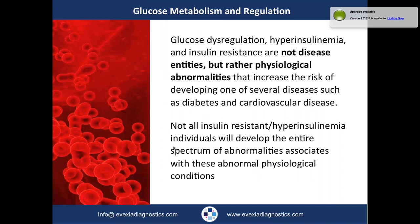Let's take a look at this first slide. Glucose dysregulation, hyperinsulinemia, and insulin resistance are not disease entities in and of themselves. What they are is physiological abnormalities that increase the risk for developing diabetes, cardiovascular disease, and a whole host of other conditions. Not all individuals with insulin resistance and hyperinsulinemia are going to develop the full spectrum of abnormalities. One of the major points of tonight's webinar is that from an integrative and functional medicine perspective, when you notice the first sign of blood glucose or insulin dysregulation, you want to treat that from a preventive medicine perspective.